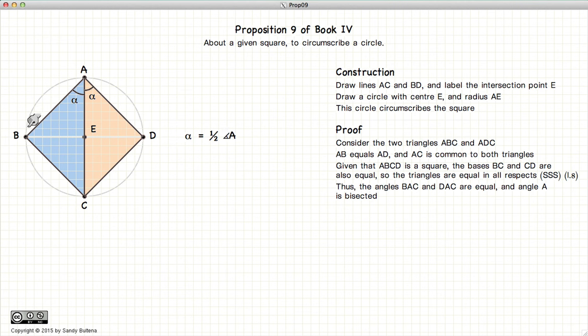Thus the angle BAC is also equal to CAD, or in other words alpha is equal to half of the original angle at A.